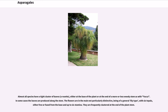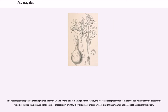Almost all species have a tight cluster of leaves, a rosette, either at the base of the plant or at the end of a more or less woody stem, as with yucca. In some cases the leaves are produced along the stem. The flowers are in the main not particularly distinctive, being of a general lily type, with six tepals either free or fused from the base, and up to six stamens, frequently clustered at the end of the plant stem. The Asparagales are generally distinguished from the Liliales by the lack of markings on the tepals, the presence of septal nectaries in the ovaries rather than the bases of the tepals or stamen filaments, and the presence of secondary growth. They are generally geophytes but with linear leaves and a lack of fine reticular venation.